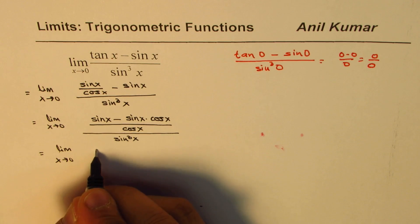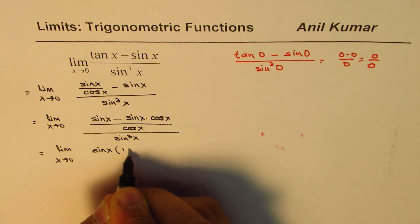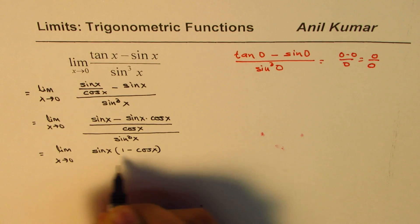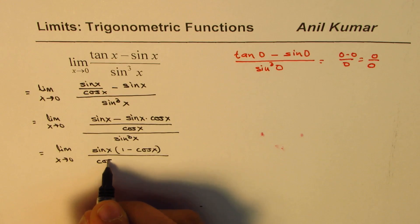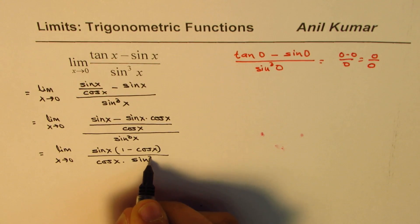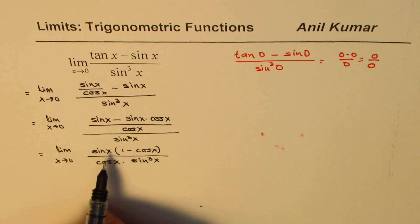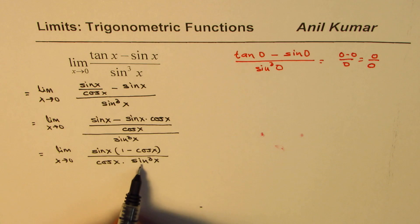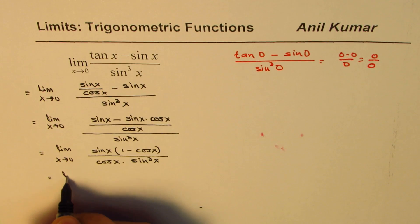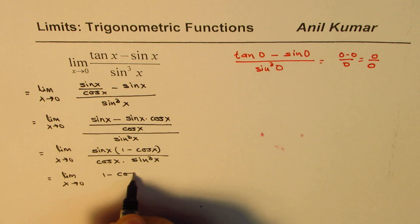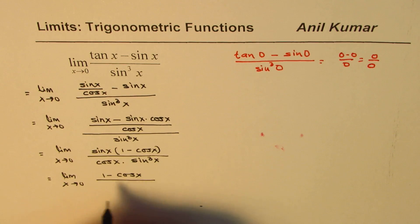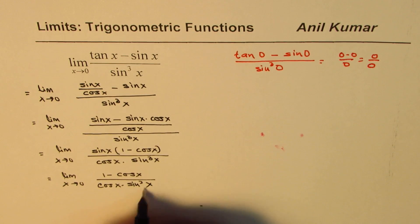taking sin as common. So we have sin x times 1 minus cos x divided by cos x times sin cube x. Now sin x cancels, and you are left with sin square x. You could write this as limit x approaches 0,